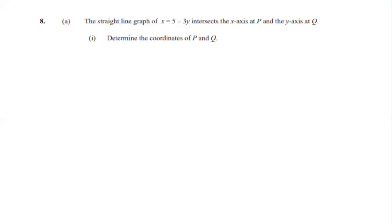Hello guys, welcome back to another video. Today we'll be working question 8 from the January 2021 Mathematics Paper 2. Question 8 says the straight line graph of x = 5 − 3y intersects the x-axis at P and the y-axis at Q, and it says determine the coordinates of P and Q.